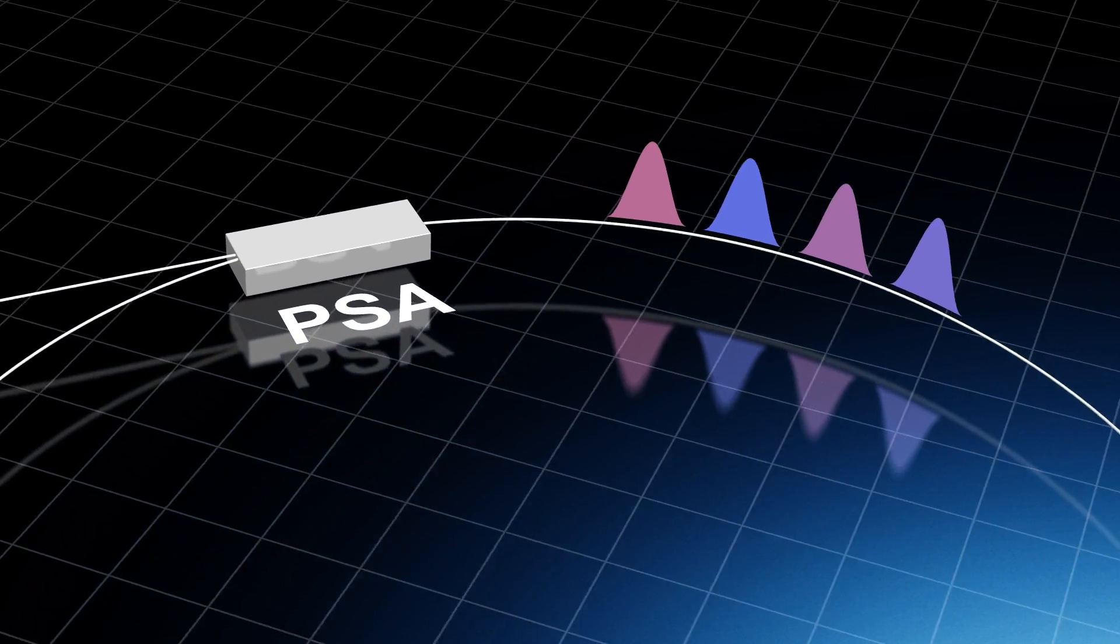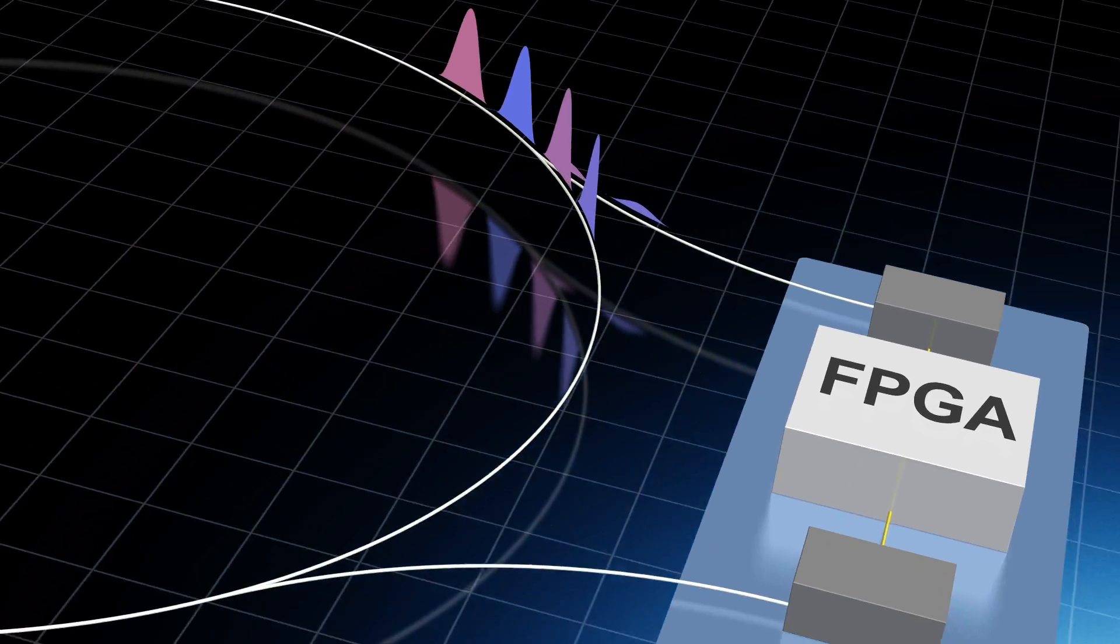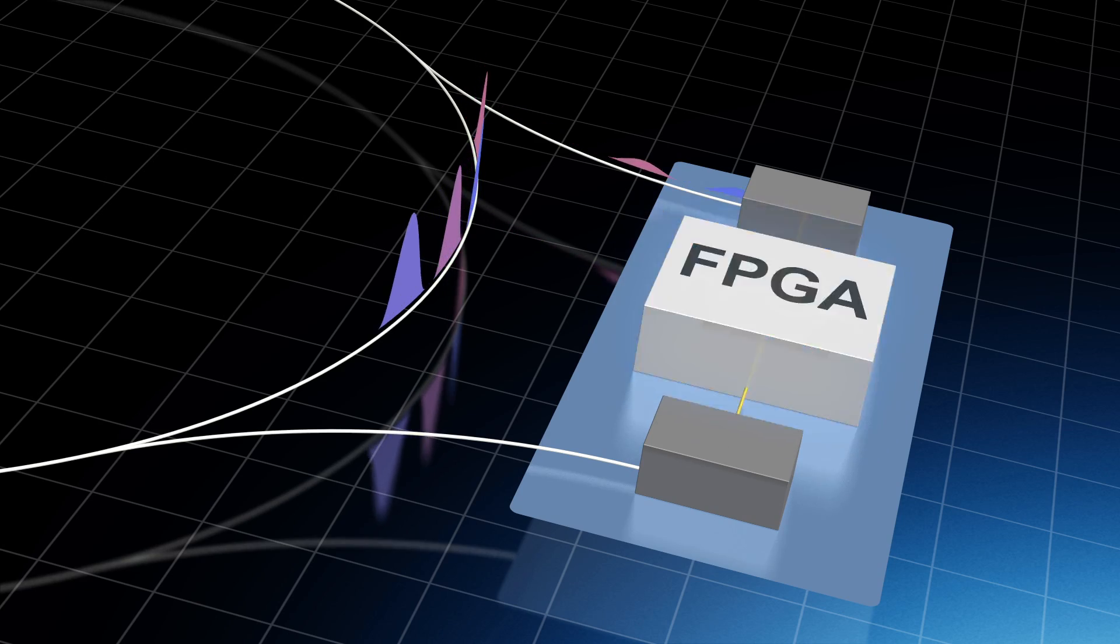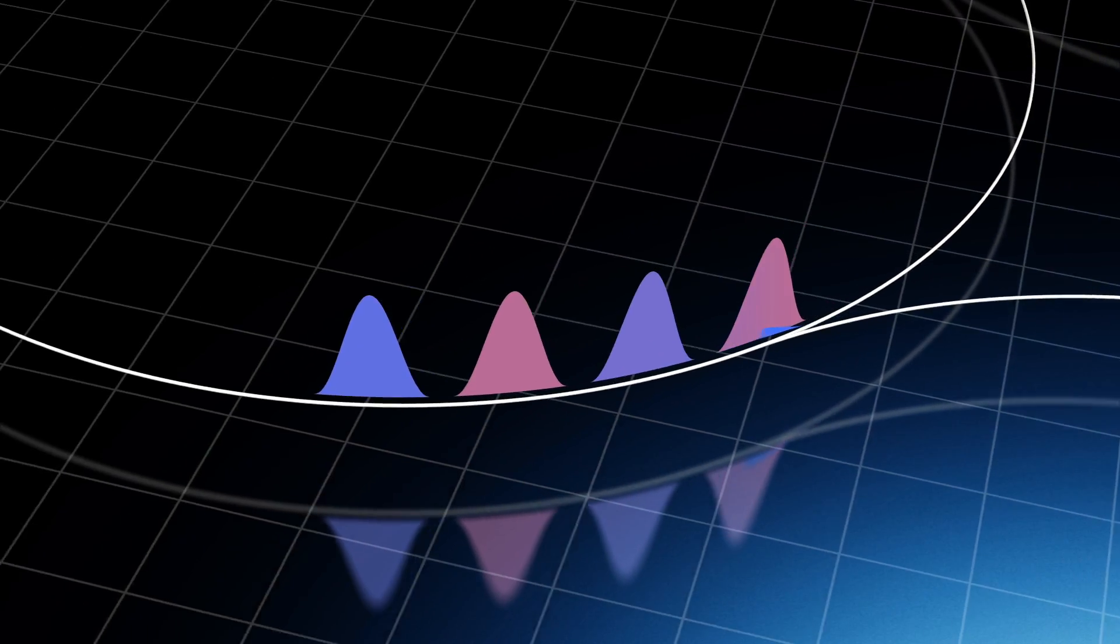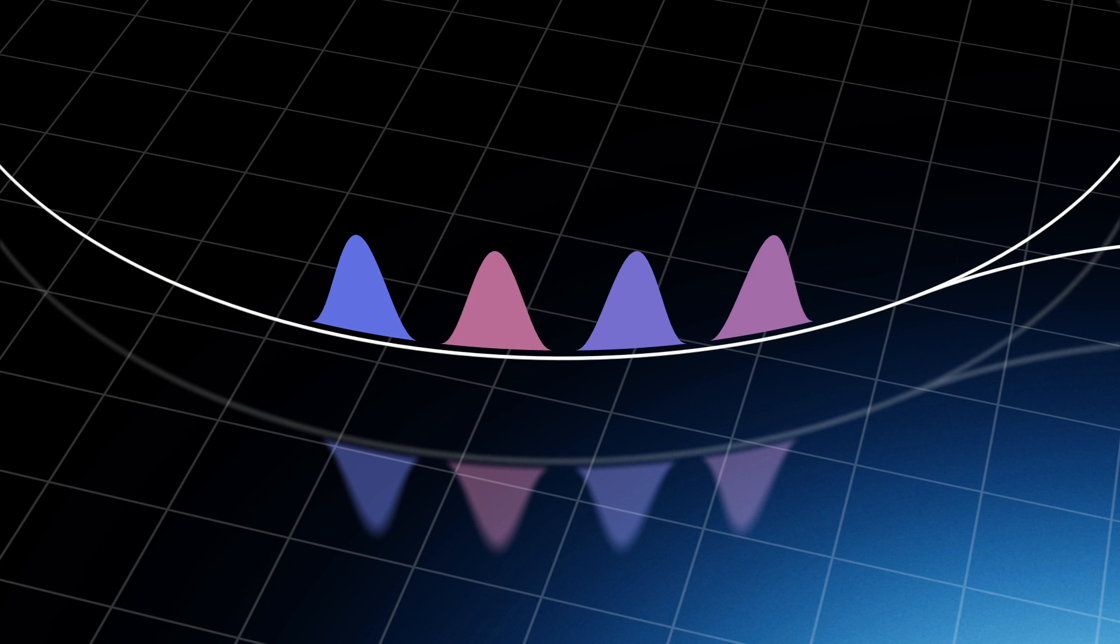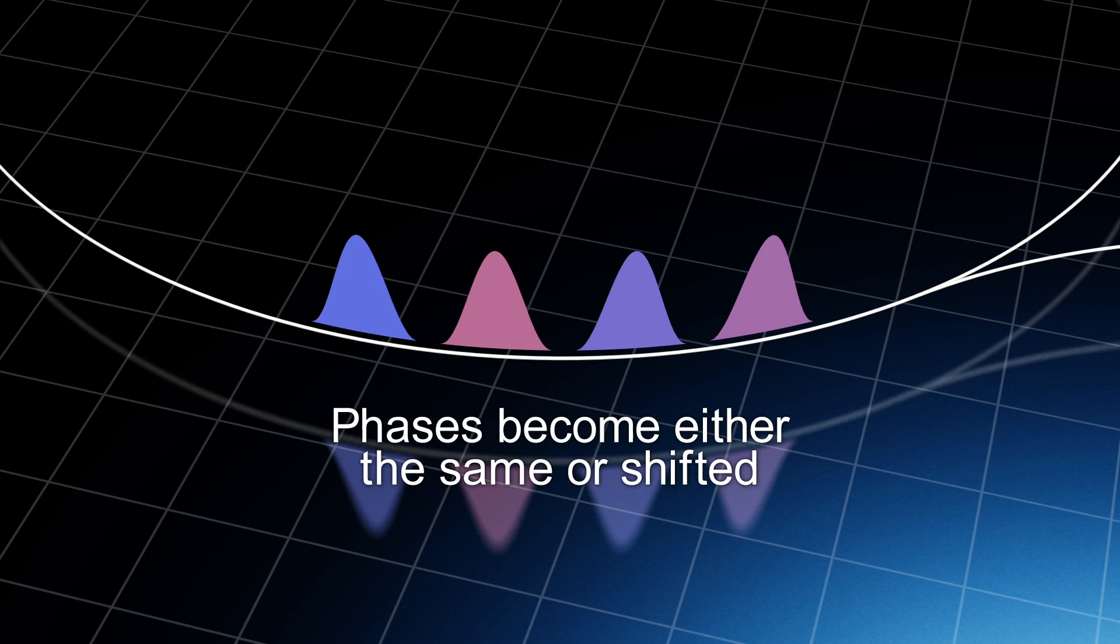Using the measurement results of optical pulses, the FPGA creates a new pulse according to a theoretical model called the Ising model and superimposes it on the original light pulse. As a result, the pulses affect each other to have either the same phase or the opposite phase.